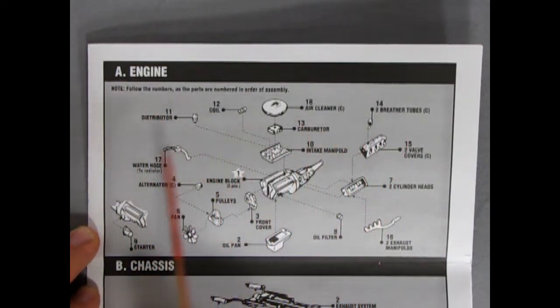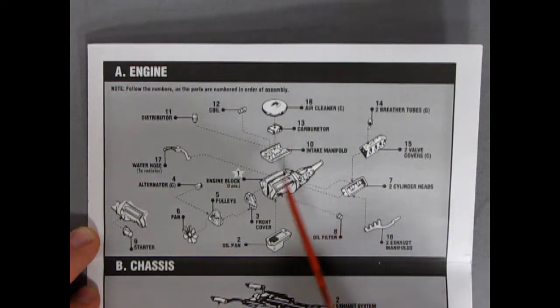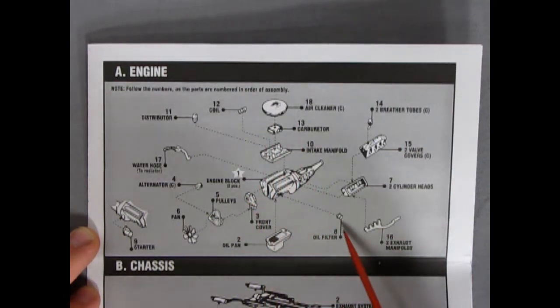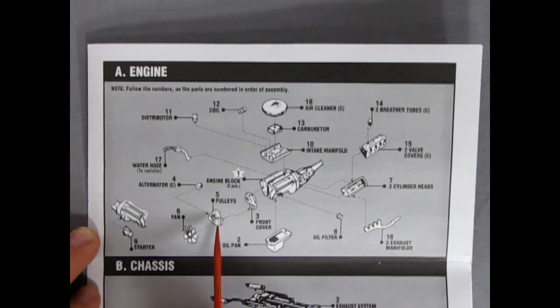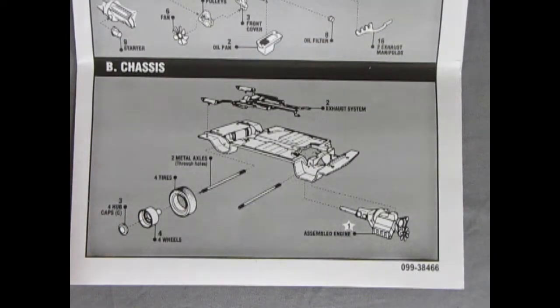The first panel is our engine because we're going to need as much speed as we can to catch all these crazy teenagers and hippies. We have our engine block in two pieces going together with our standard transmission, intake manifold, carburetor and air cleaner, coil, front cover, oil pan and oil filter. There's our cylinder heads, valve covers with breather tubes, exhaust manifolds, fan and pulleys, the starter, water hose and distributor.